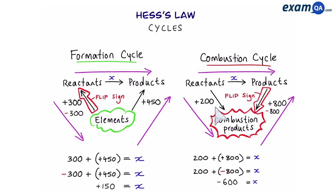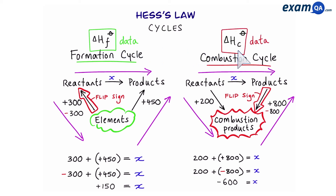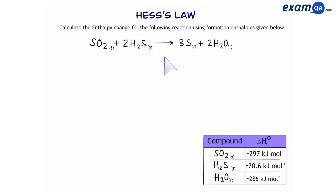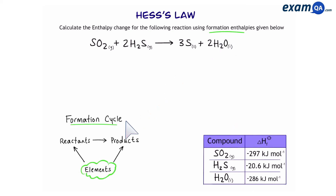Which cycle do we use? It all depends on what kind of data we've been given. If they give you formation data, you do a formation cycle. If they give you combustion data, you do a combustion cycle. Here's an example: we have a reaction and we want to work out the overall enthalpy change. Because they've given us formation enthalpies, we're going to make a formation cycle — putting the elements at the bottom and pointing arrows up.